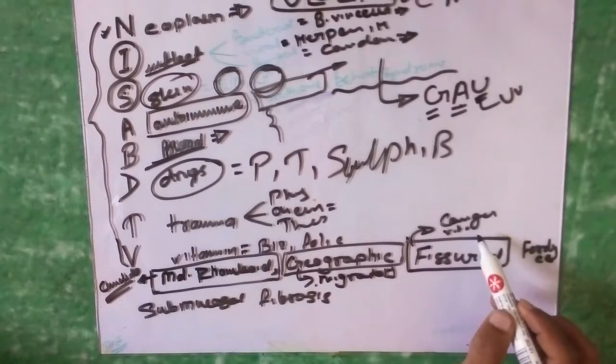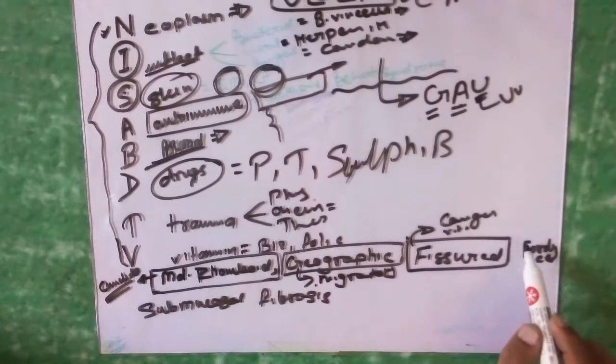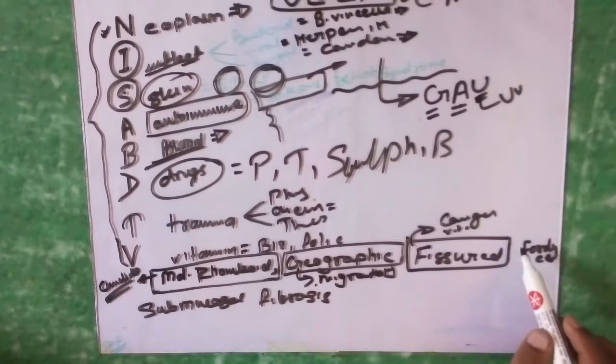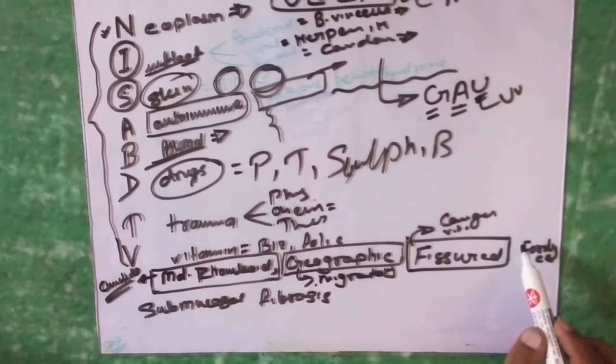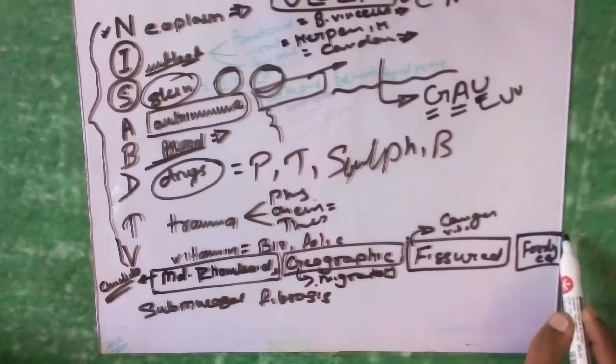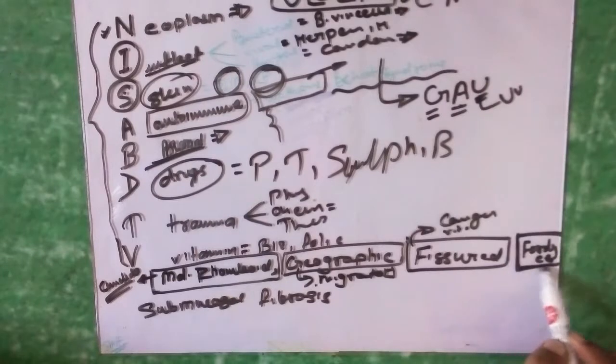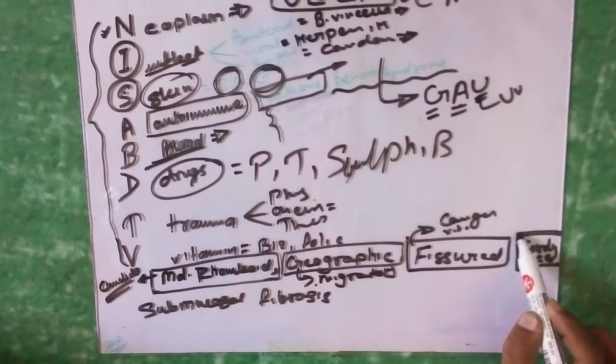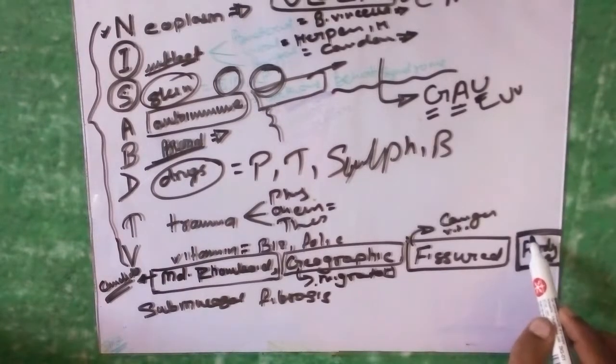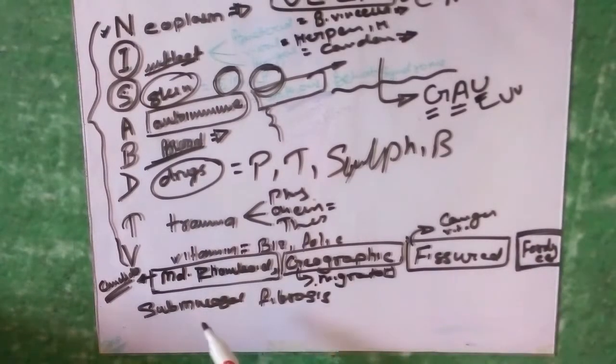There is a small condition called Fordyce spots. Fordyce spot is the yellow spot due to aberrant sebaceous glands underneath the buccal mucosa.